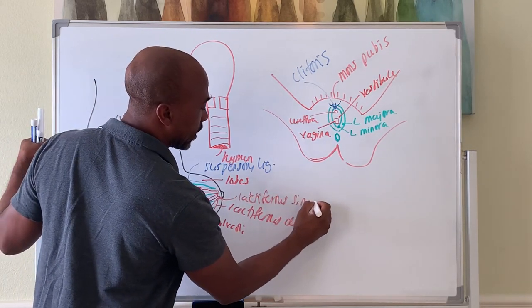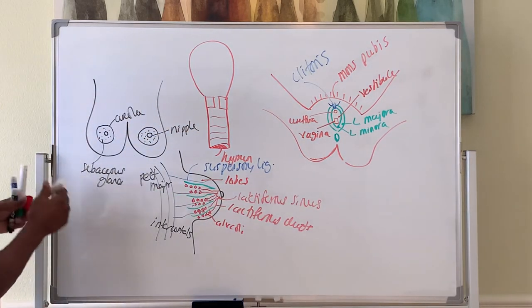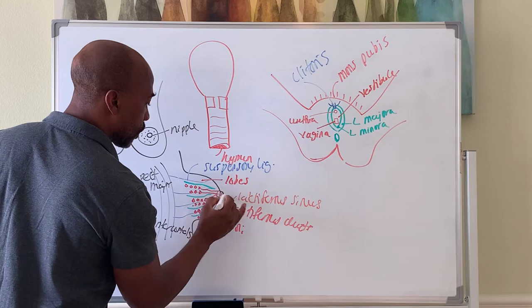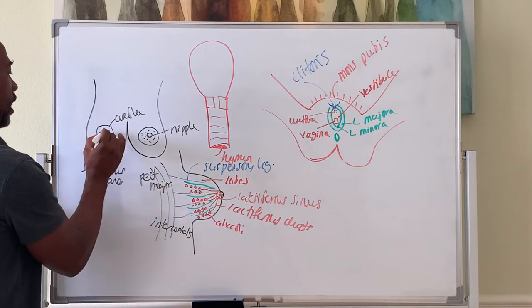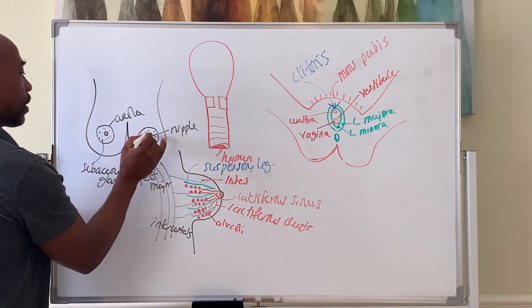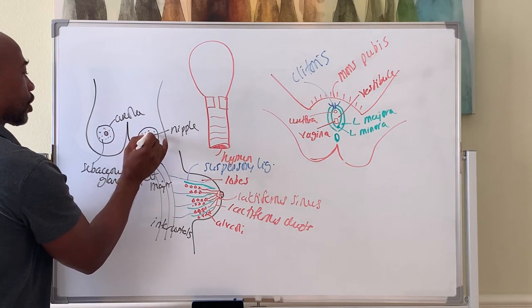When the baby suckles, milk comes forward to the nipple. The nipples have tiny holes in them where milk comes out. They're not blind structures.